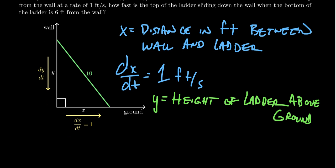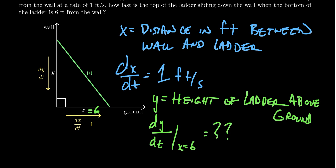The stuff in blue is what was given to us. We need to figure out the derivative of Y with respect to T at the moment the bottom of the ladder is six feet away from the wall. So we know X equals six, and we need to find dY/dT when X equals six. We have the given rate and the unknown rate — now we need to relate them.